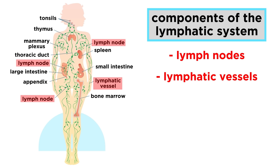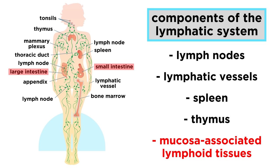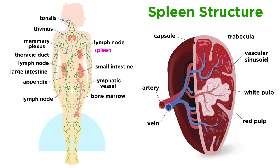Lymph nodes and lymphatic vessels are the main structures comprising the lymphatic system, but they are not the only ones involved in immune organization and defense. Other structures include the spleen, the thymus, and mucosal-associated lymphoid tissues, so let's talk about these as well.